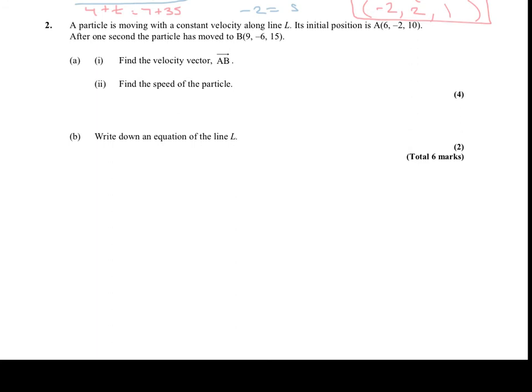And so again, that would be B minus A, so 9 minus 6 is 3, and negative 6 minus negative 2, so negative 6 plus 2 is negative 4, and 15 minus 10 is 5. And so there's our velocity vector.